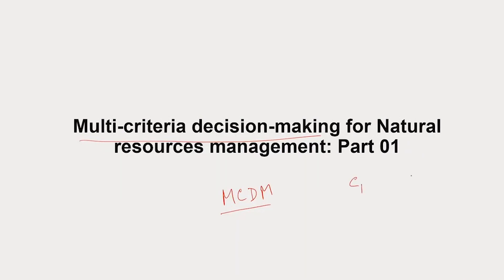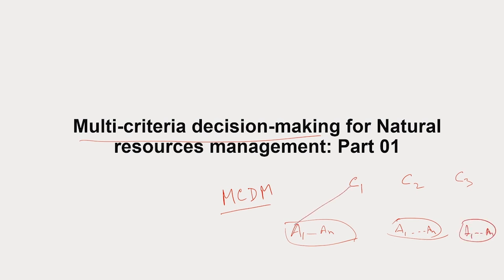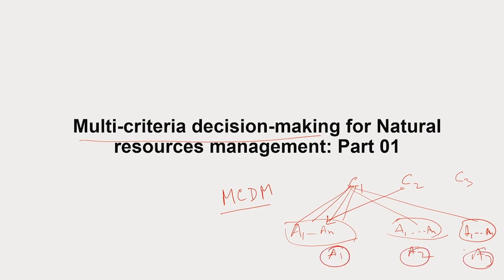MCDM uses mathematical principles for finding out the best possible alternative for a given criteria. We have seen that we discussed criteria 1, 2, 3, and then suppose we have alternatives A1 to AN for each option. For C1, we will go alternative 1, alternative 2, alternative 3, up to N. Similarly for C2, it will try alternative 1, alternative 2, alternative 3, to alternative N.